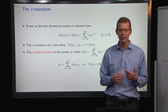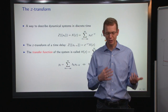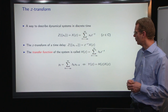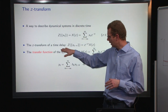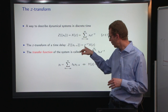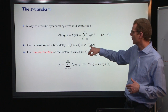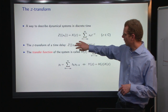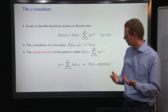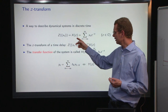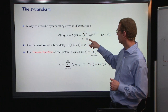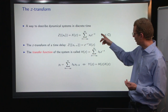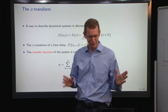The Z-transform is one way to describe dynamical systems in discrete time. It somewhat corresponds to frequency. So when you do a Z-transform of a time delay — Z-transform of X(T minus tau) — you get Z to the minus tau power times X(Z). You denote it X(Z), upper case X, and it's the infinite sum of X(T) times Z to the minus T power, where Z are, in general, complex numbers, so we are in the complex plane.